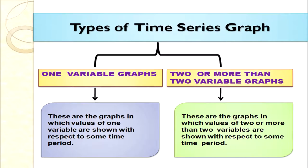In one-variable graphs, the value of one variable is shown with respect to some time period. In two-or-more-variable graphs, the values of two or more variables are shown with respect to time period. Once we know about these two types, we can discuss their construction.